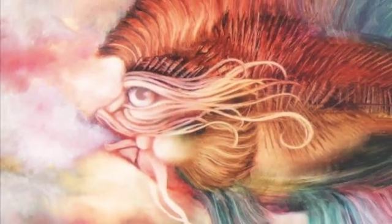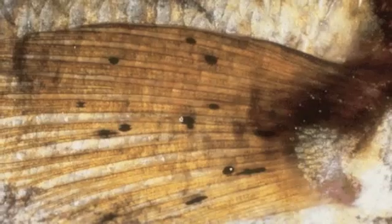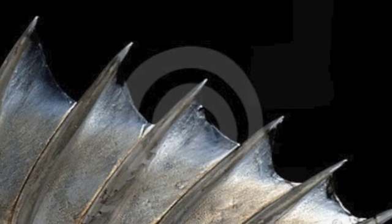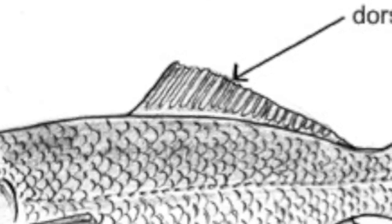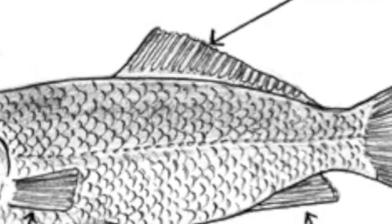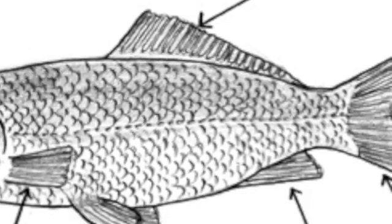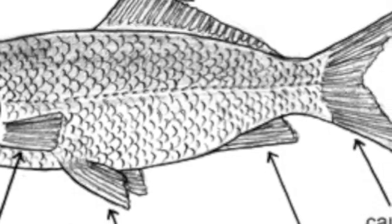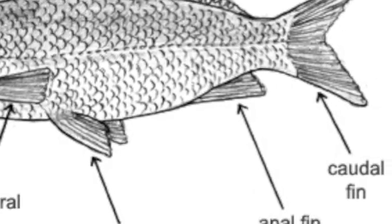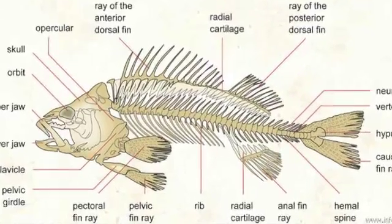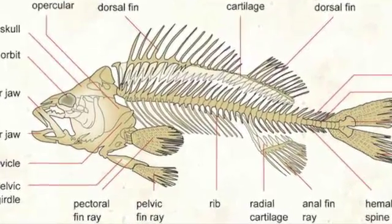A fish has a number of fins. A fin is a membrane supported by rays or spines that function in swimming or orientation in the water. One or more dorsal fins may be located along the center of the back. A caudal fin lies at the end of the tail and is the primary organ for generating thrust to move through the water. One or more anal fins are situated on the ventral midline near the caudal fin.